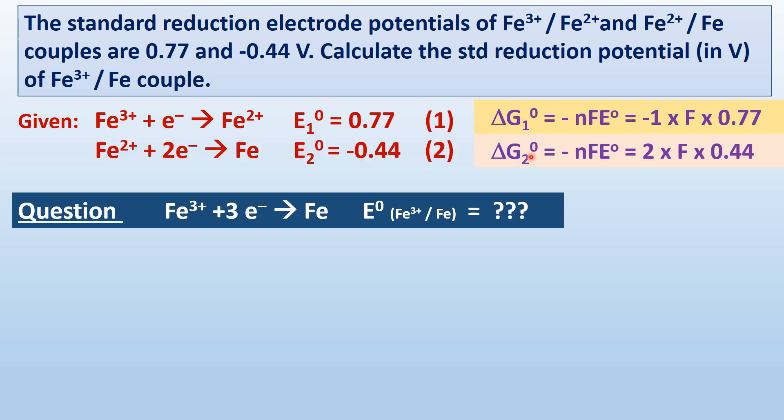For equation 1, the standard free energy change for this process is ΔG₁⁰ = -nFE⁰, where N number of electrons involved is 1, F is Faraday constant, and E⁰ is the standard reduction potential of this couple. Similarly, for equation 2, ΔG₂⁰ = -2F × E₂⁰, therefore 2 electrons into Faraday into 0.44.